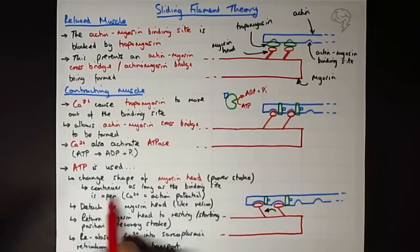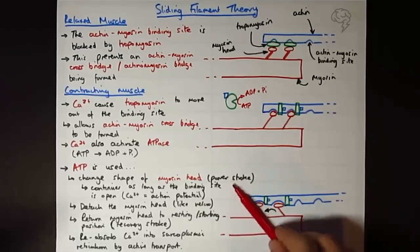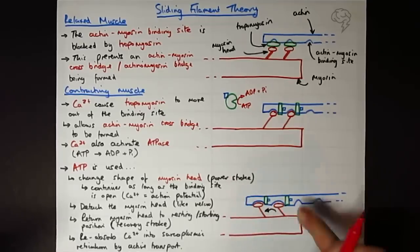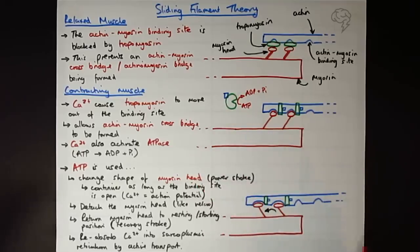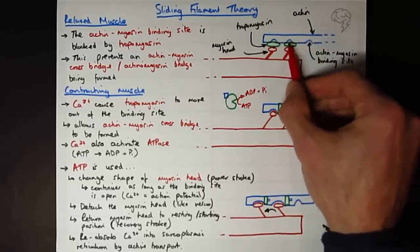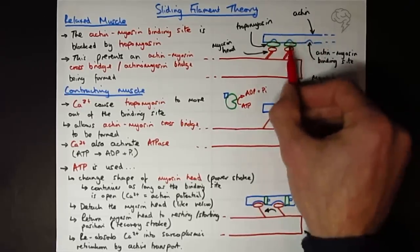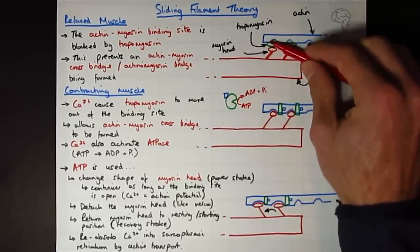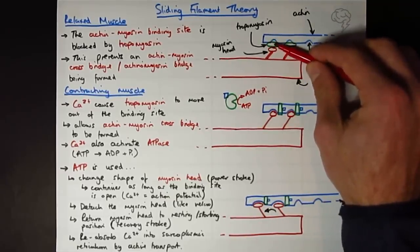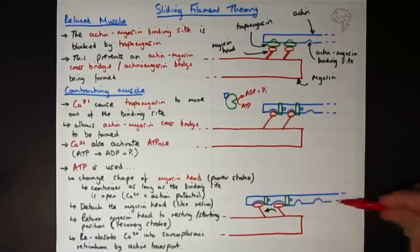As I've said here, this continues. So it's a ratchet motion. So just like rowing, it's going to attach and then they're going to reattach to the next binding site and then pull it in. And then to the next binding site and pull it in. And then eventually we're going to reabsorb the calcium. The calcium is going to go away. The troponin will change shape. Sorry, the tropomyosin will change shape, come back over the binding site. And then once the binding site is blocked, then we can't form any more cross bridges. Then the actin is going to slide backwards back to its resting position. And that is the sliding filament theory.